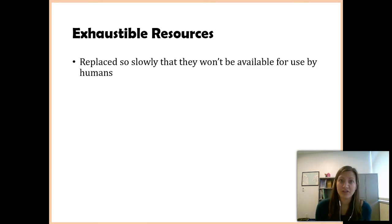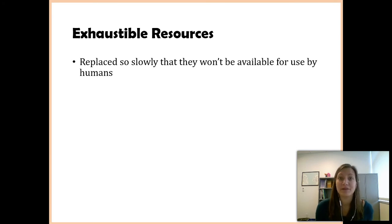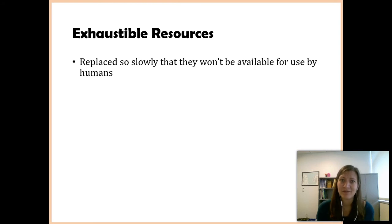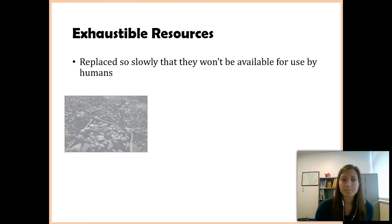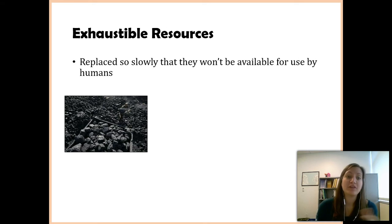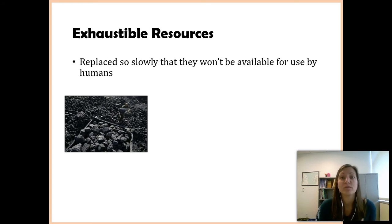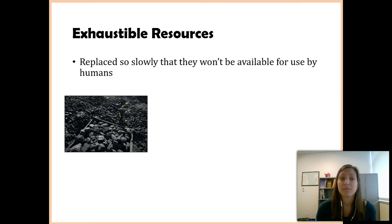On the other side of the spectrum, we have exhaustible resources. These do get replaced, but really, really slowly — we're talking hundreds of thousands or millions of years. So once we use them, more or less they're gone. One example is fossil fuels: coal, oil used for gasoline, and natural gas used in homes for cooking. Coal and oil and natural gas are made naturally by Earth, but it takes millions of years, so once they're gone in our lifetime, they're more or less gone.